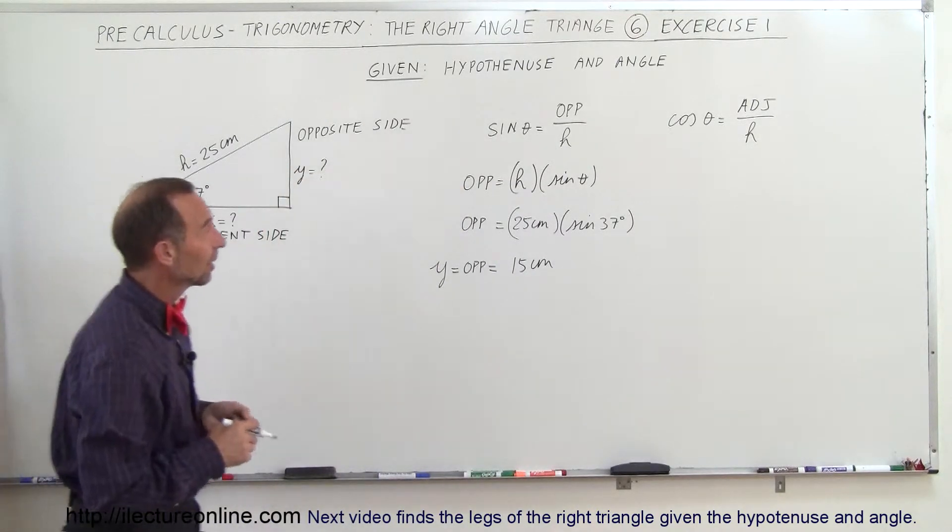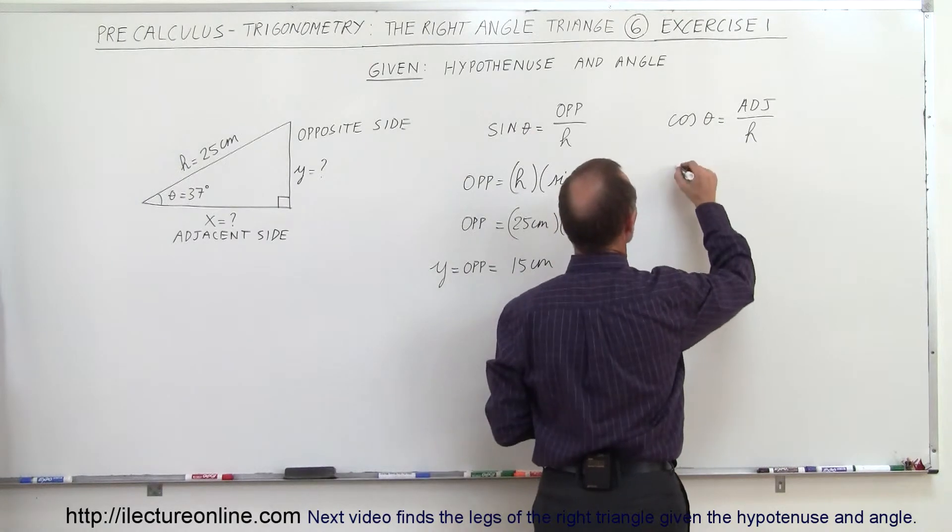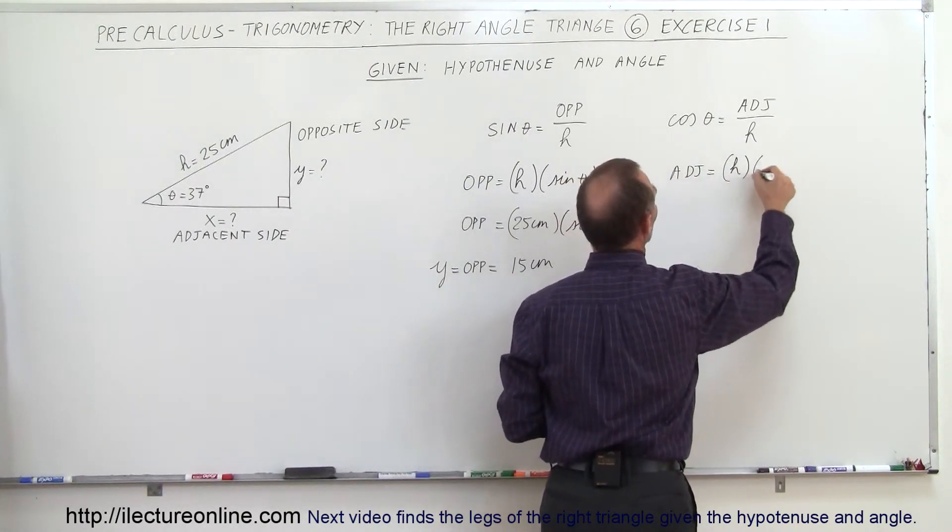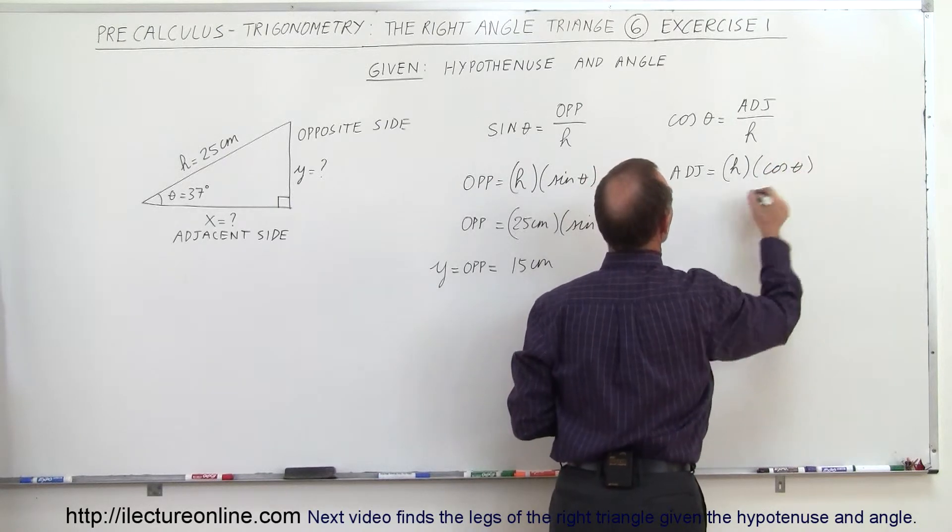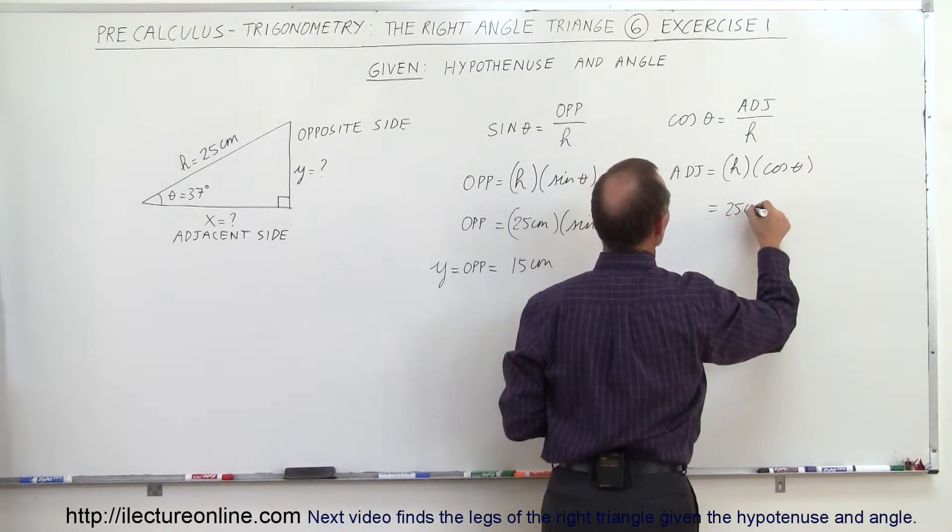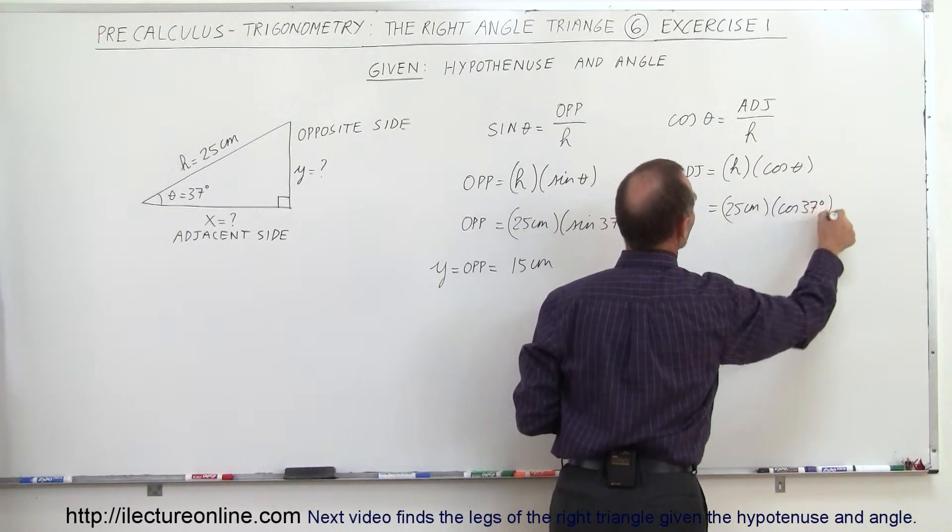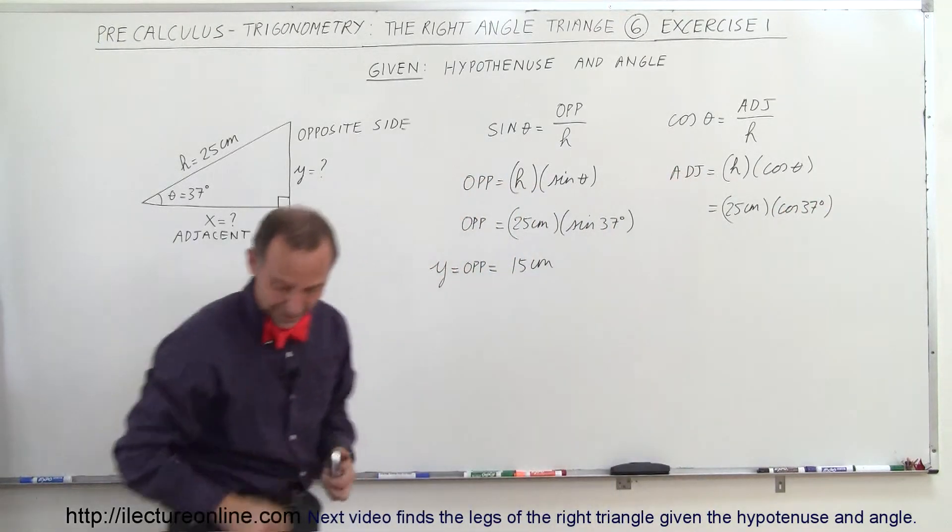Now for the adjacent side. I can do the same thing over here. The adjacent side is equal to H times the cosine of the angle theta. And H is 25 centimeters, and the cosine of 37 degrees.